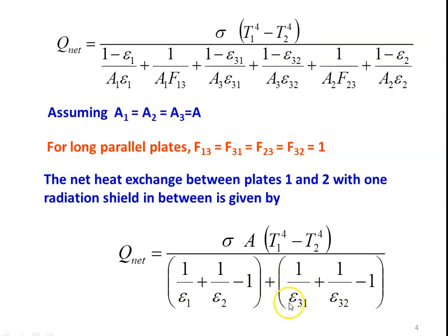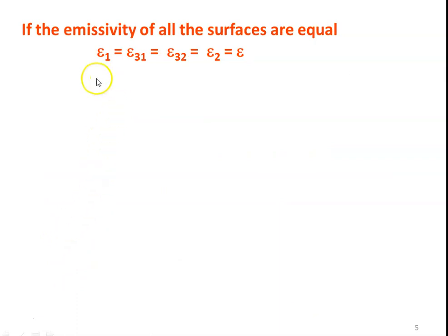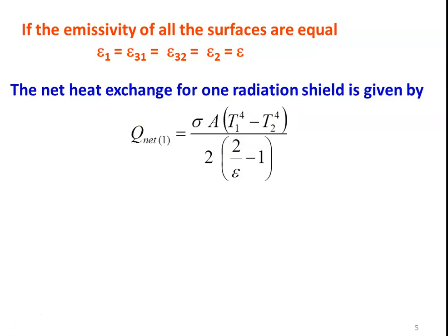In the denominator, the second term is due to the radiation shield. Suppose there is no radiation shield — epsilon 31 and epsilon 32 are not in the equation and the second term is completely dropped, giving 1/epsilon1 + 1/epsilon2 - 1, which is the radiation heat transfer without the shield. When you add the shield, there is an additional resistance in the denominator given by the emissivity of the radiation shield.